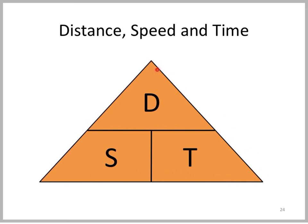For example, if we are required to find the distance, it will be equal to S times T—the speed multiplied by time. And if you are required to find S, the speed, then we can simply divide D by T.